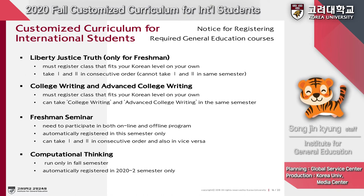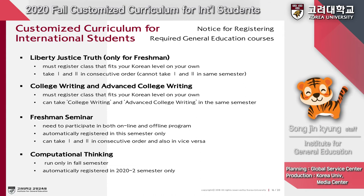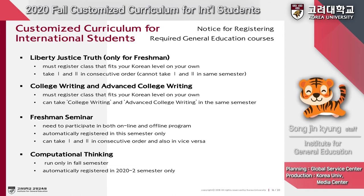You must take Liberty Justice Truth 1 and 2 in consecutive order and cannot take both in the same semester. For College Writing and Advanced College Writing, you must register for the class that fits your Korean level, and you may take College Writing and Advanced College Writing in the same semester. For Freshman Seminar, you must participate in both online and offline programs. This semester, Freshman Seminar 2 will be automatically registered in your system, but you must register Freshman Seminar 1 or 2 on your own from next semester. Please verify that Freshman Seminar is properly registered. Computational Thinking runs only in the fall semester and will be automatically registered for 2020 second semester only. Check the QPID board for more details.